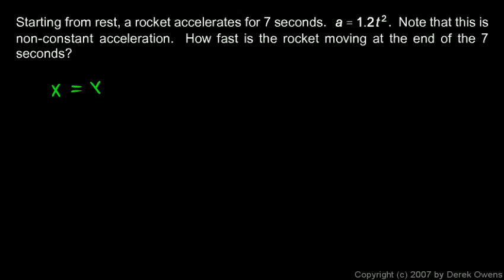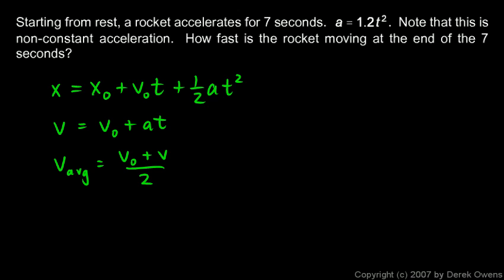You might remember some equations from your physics class that look something like this. There's an equation for position: x = x₀ + v₀t + ½at², or some variation on that. There's equations like this: v = v₀ + at, that's velocity, is equal to the initial velocity plus the acceleration times the time. We had equations like this. The average velocity is equal to the initial velocity plus the final velocity over 2. And there's another equation that said v² = v₀² + 2aΔx.